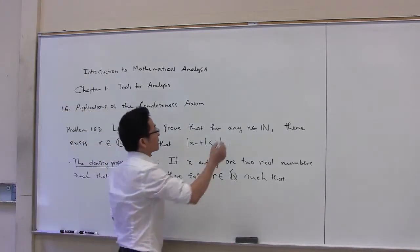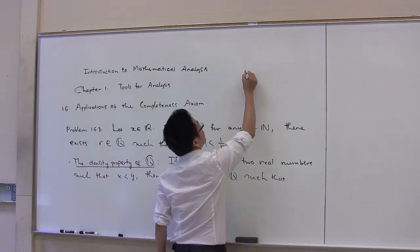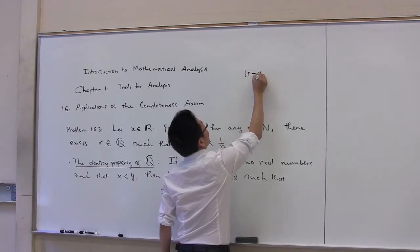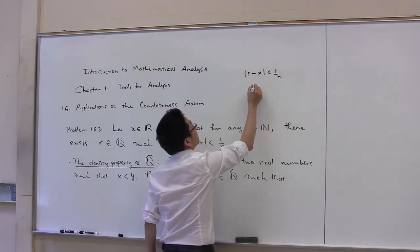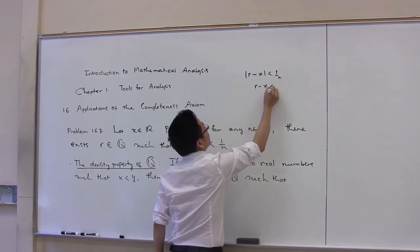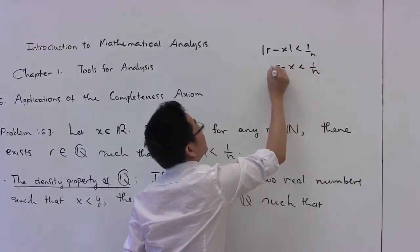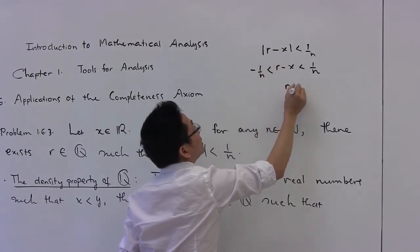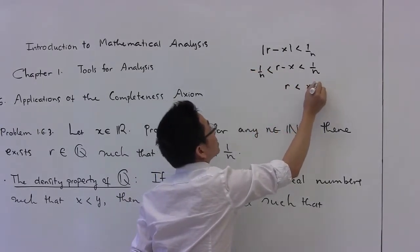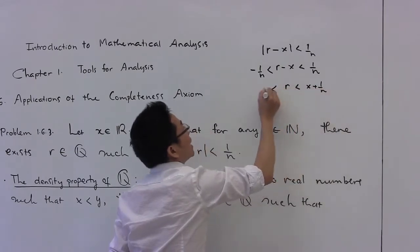This inequality can be written as follows. The absolute value of r minus x is less than 1 over n. Or equivalently, r minus x is in between minus 1 over n and 1 over n. Or r is in between x minus 1 over n and x plus 1 over n.